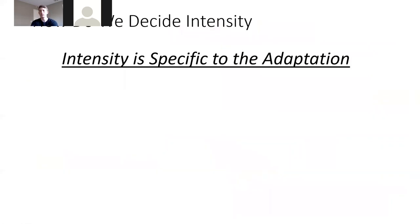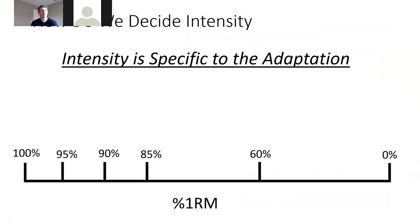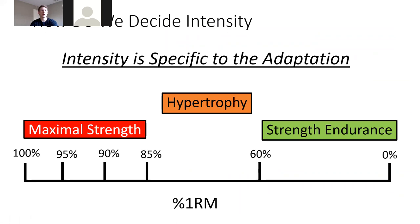On the 1RM continuum: maximal strength is best developed above 85% (approximately 5RM and below). Hypertrophy is best gained between about 60–85%, where mechanical tension and repetition volume are both high. Strength endurance, or muscular endurance, involves repeatedly creating force without rest — typically near failure per set with maximum repetitions per load.